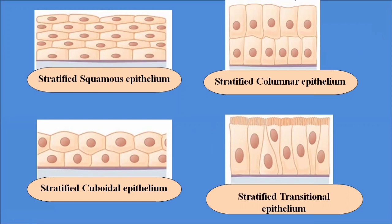Stratified transitional epithelium consists of pear-shaped cells. It lines several parts of the urinary tract, including the bladder, and allows for stretching as the bladder fills. It is called transitional because its shape changes — from columnar when relaxed to squamous when stretched — depending on the process of urination. These cells basically line the urinary bladder.